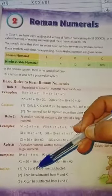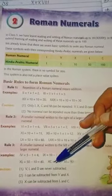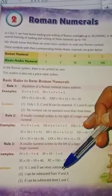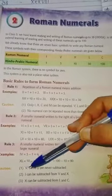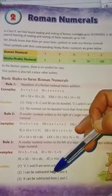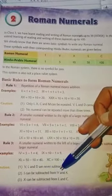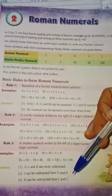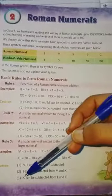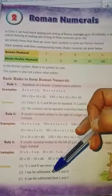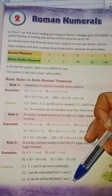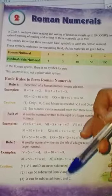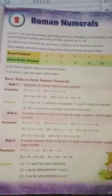V, L, and D are never subtracted. I can be subtracted from V and X. X can be subtracted from L and C.